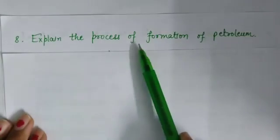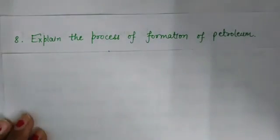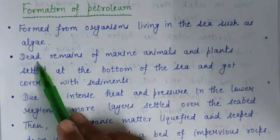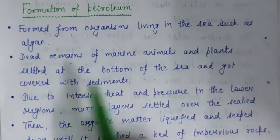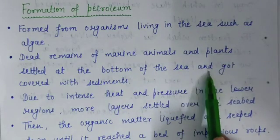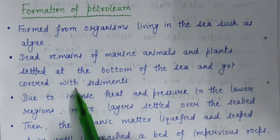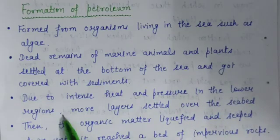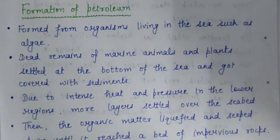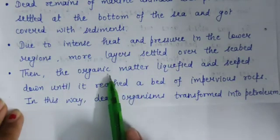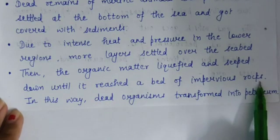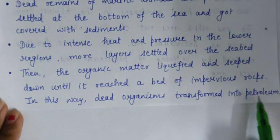Question number 8 is: explain the process of formation of petroleum. Petroleum was formed from organisms living in the sea such as algae. Dead remains of marine animals and plants settled at the bottom of the sea and got covered with sediments — layers of sand and clay. Due to intense heat and pressure in the lower regions, the organic matter liquefied and seeped down until it reached a bed of impervious rocks. In this way, dead organisms transformed into petroleum.